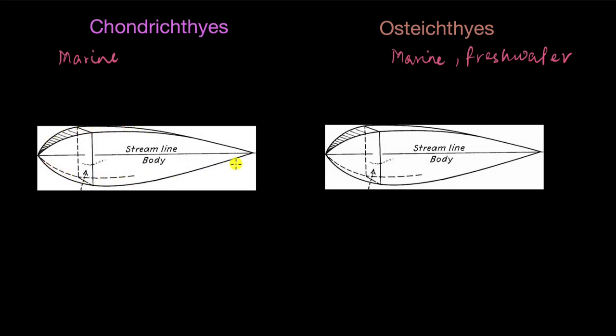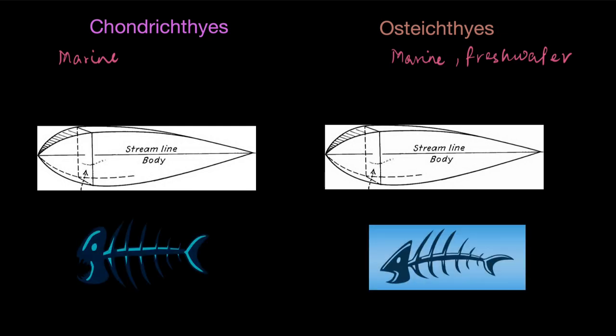Both types of fish have a streamlined body. A streamlined body has a shape which provides minimum resistance when something is moving through water and in air. It's a similar shape that can be found in airplanes and in cars as well.